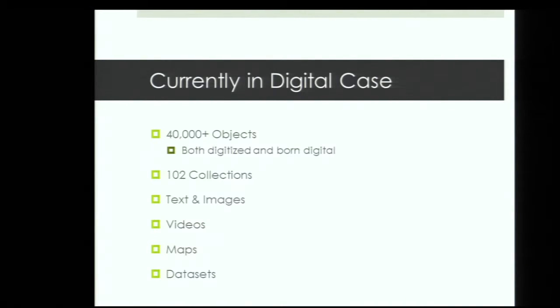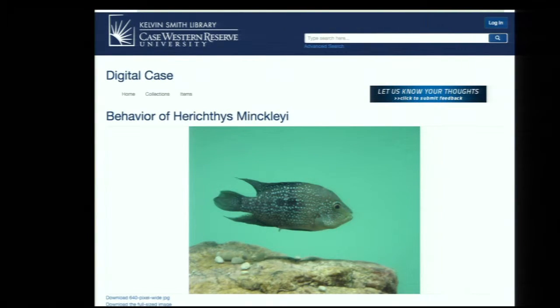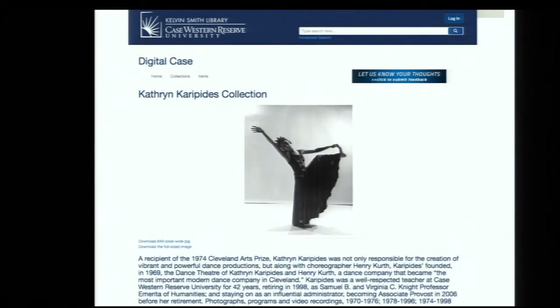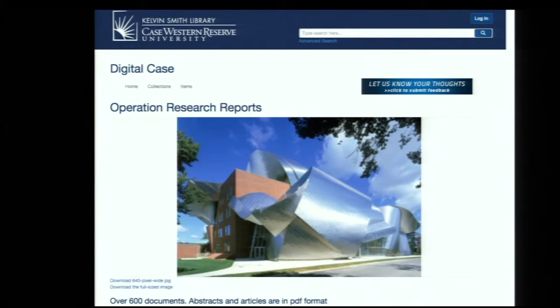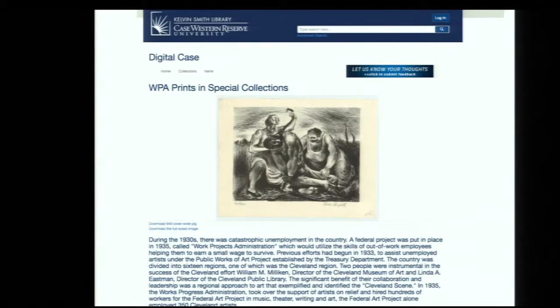Currently we have 40,000 objects in DigitalCase — both born digital and digitized content — within 102 different collections. They can be text, images, videos, maps, data sets, anything of the like. For example, a faculty member in biology used videos for a journal article and needed permanent URLs to reference them — we provided those. We also have the Katherine Karapides dance collection, operation research reports from the Weatherhead School of Management, and WPA prints from the 1930s that we've digitized from the library.